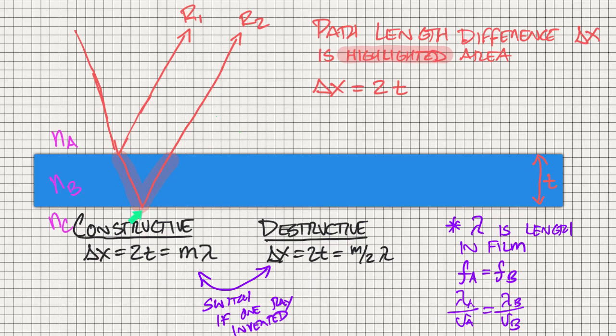It's going to hit this boundary here, which is going to create reflection two. What can happen is this angle that is provided is just shown to see the difference, and it is much larger than what would actually be happening. But what we can say is that there's a path length difference of delta x between ray one and ray two.